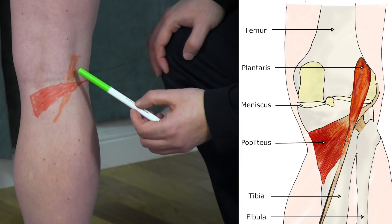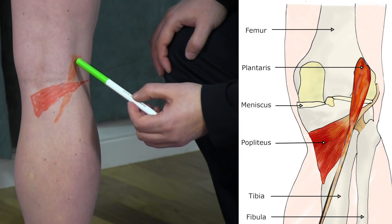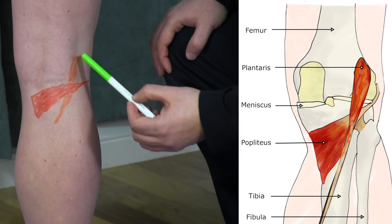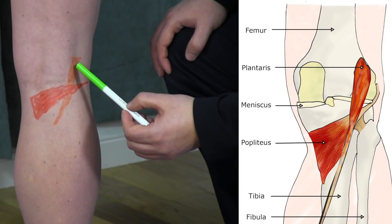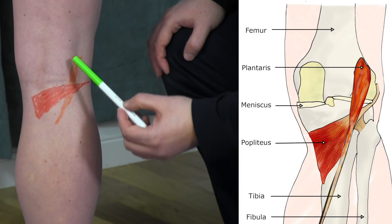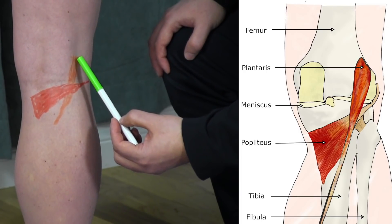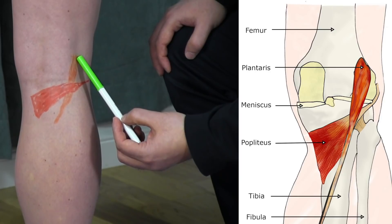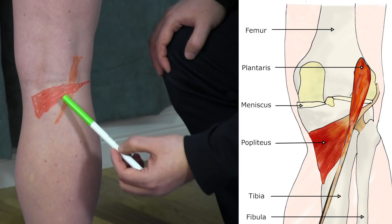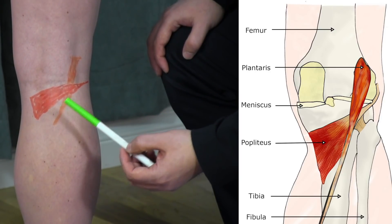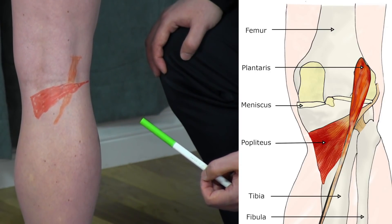The plantaris also originates on the posterior aspect of the distal femur — specifically the posterior lateral aspect of the distal femur — and it inserts further down, all the way down to the calcaneus.